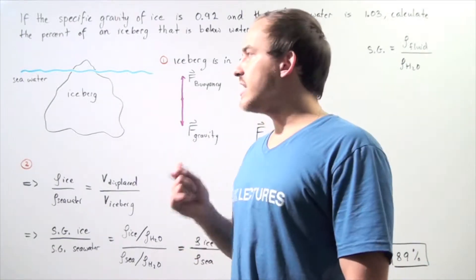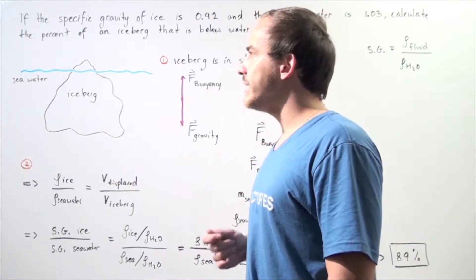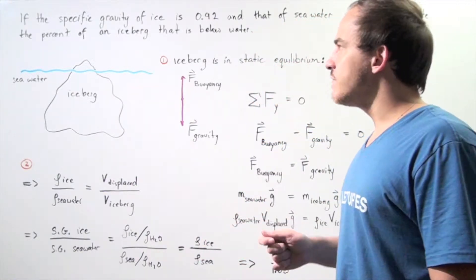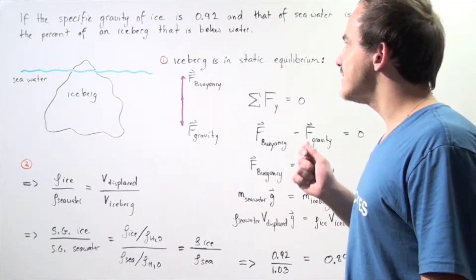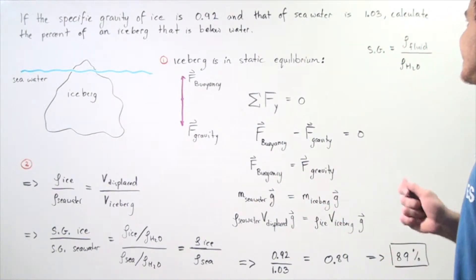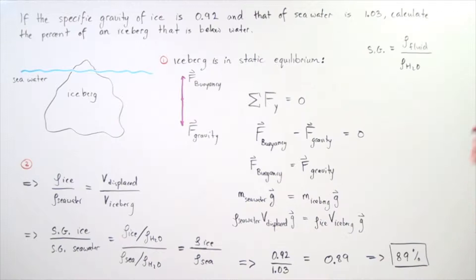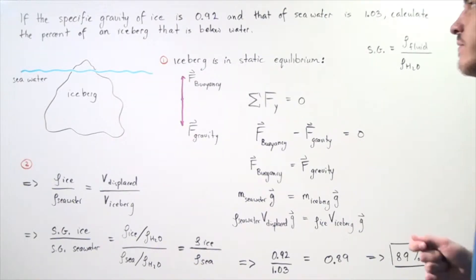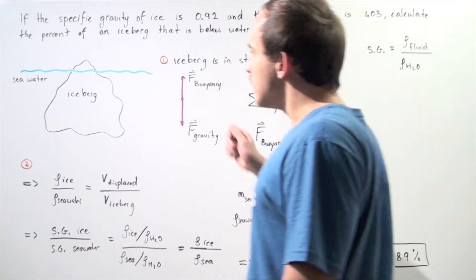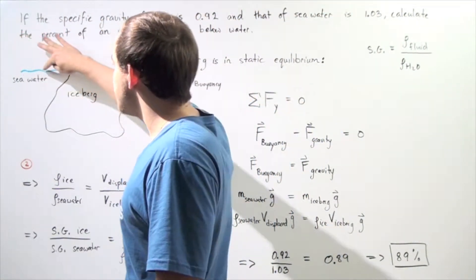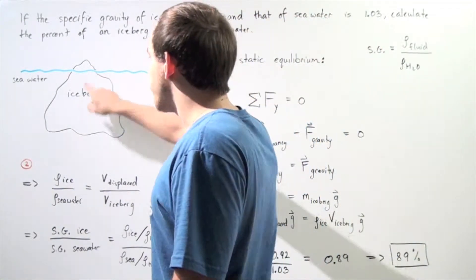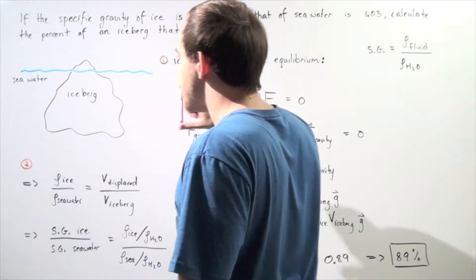Let's look at the following example that deals with Archimedes' Principle and specific gravity. If the specific gravity of ice is 0.92 and that of seawater is 1.03, calculate the percent of an iceberg that is below water. Let's suppose our surface of seawater is shown with the following blue line and our iceberg is shown to have the following shape.